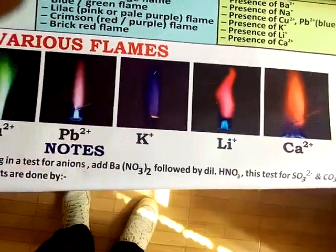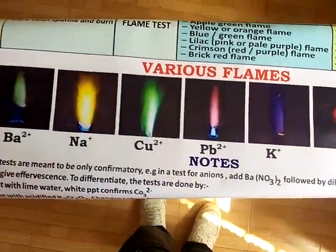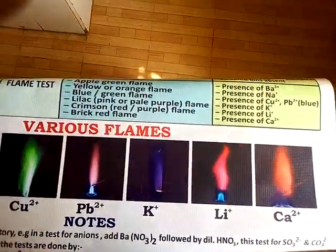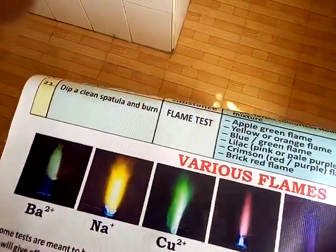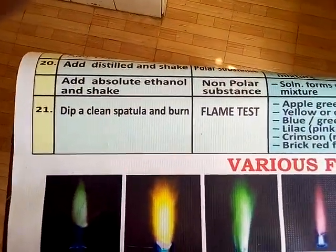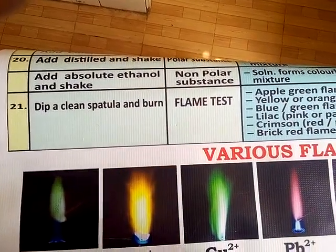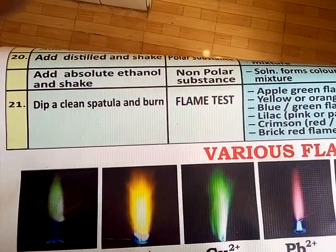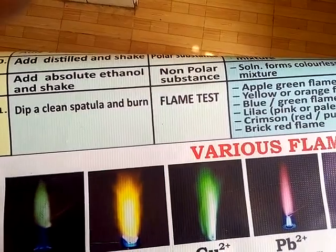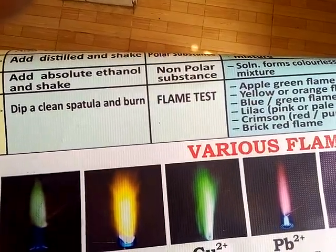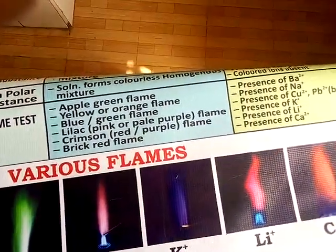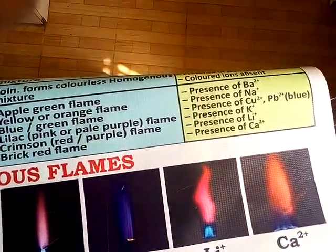So those are the types of flame colors you should know, and this is what we call the flame test. You will be asked, for example, to dip a clean spatula in the solution, then test for the metal ions present using the flame test.